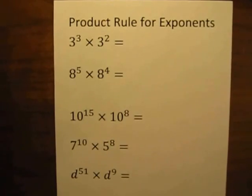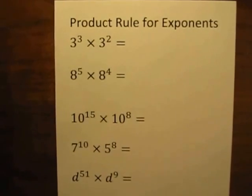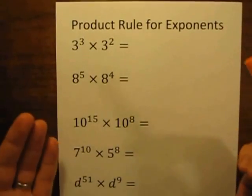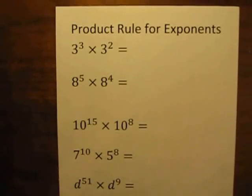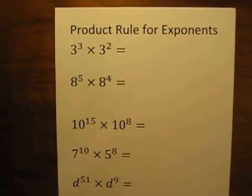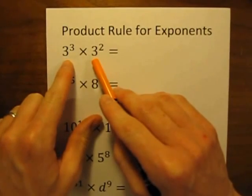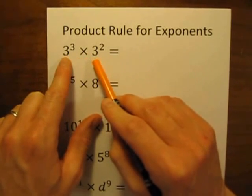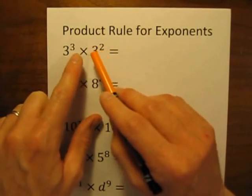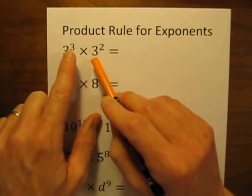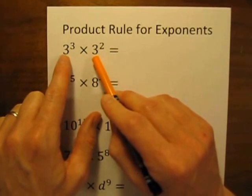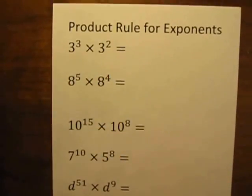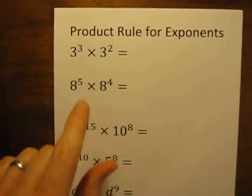I'm going to show you how to use it and why it works. The product rule — remember, product just means the answer when you multiply two numbers together. So if you have two numbers with exponents that you're multiplying together, and if the bases are the same, you may use the product rule. And let me show you why.